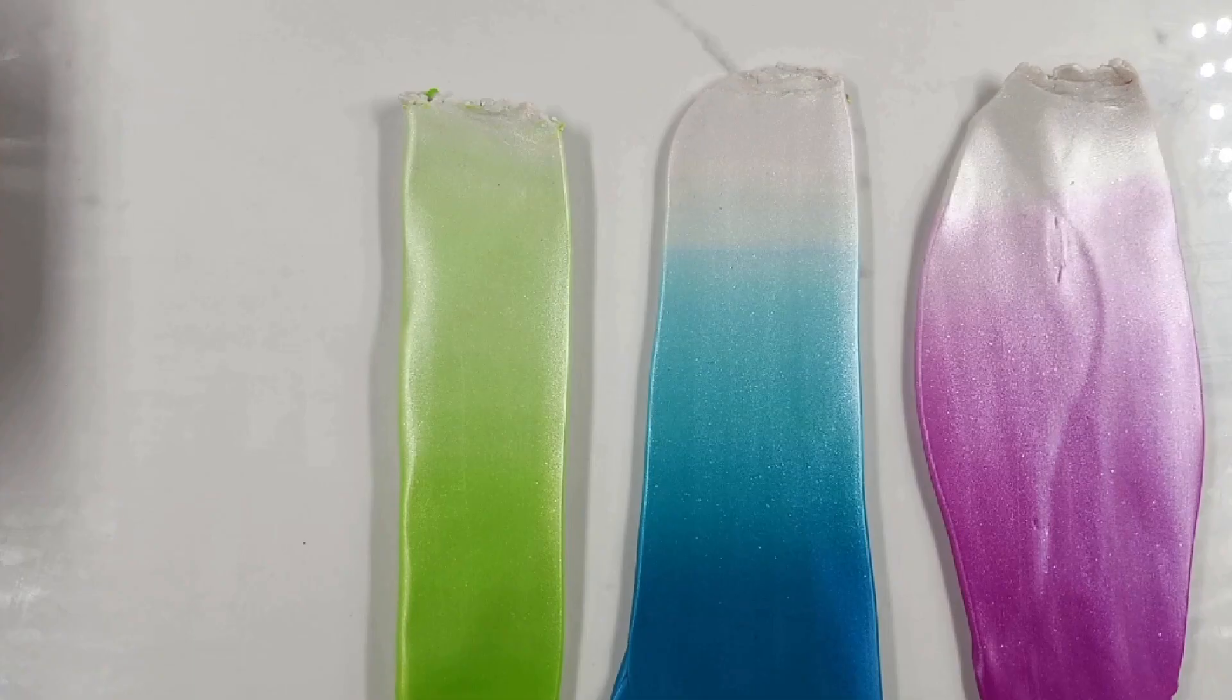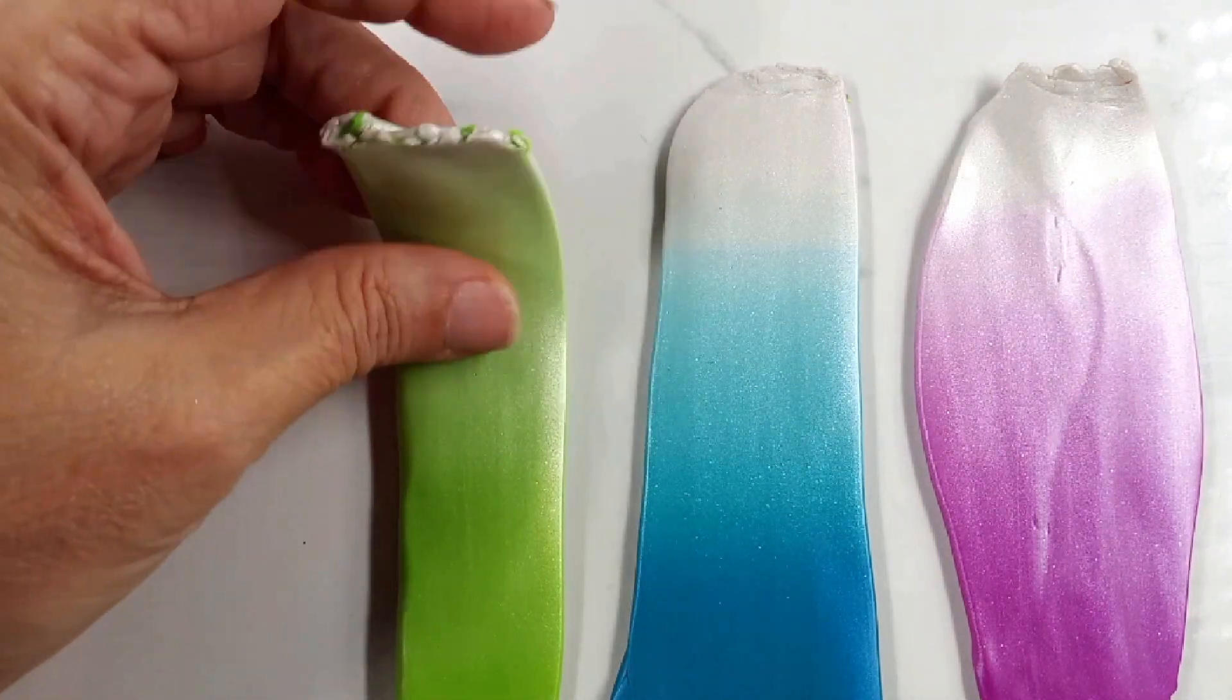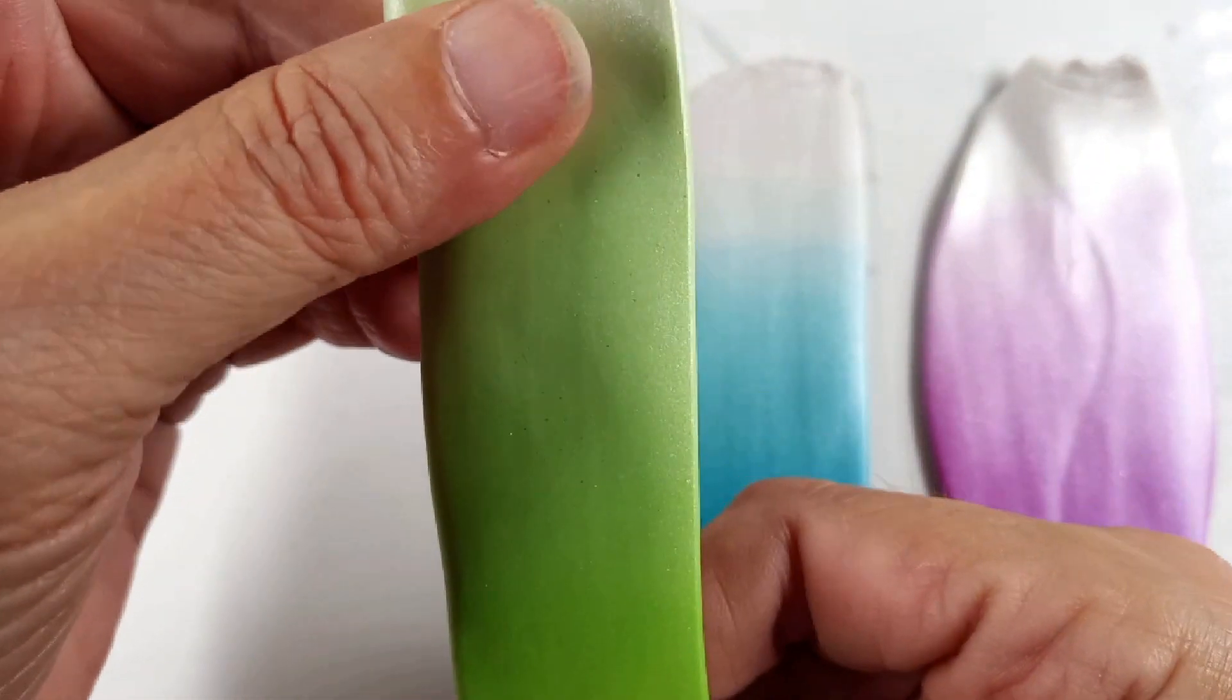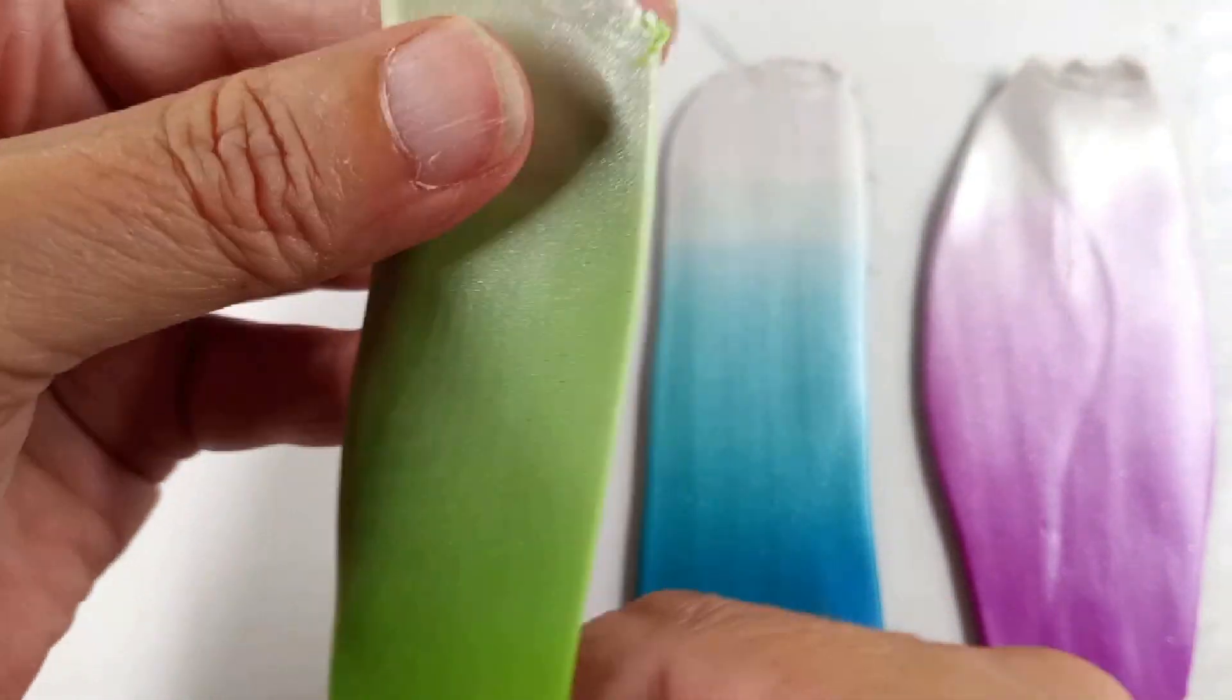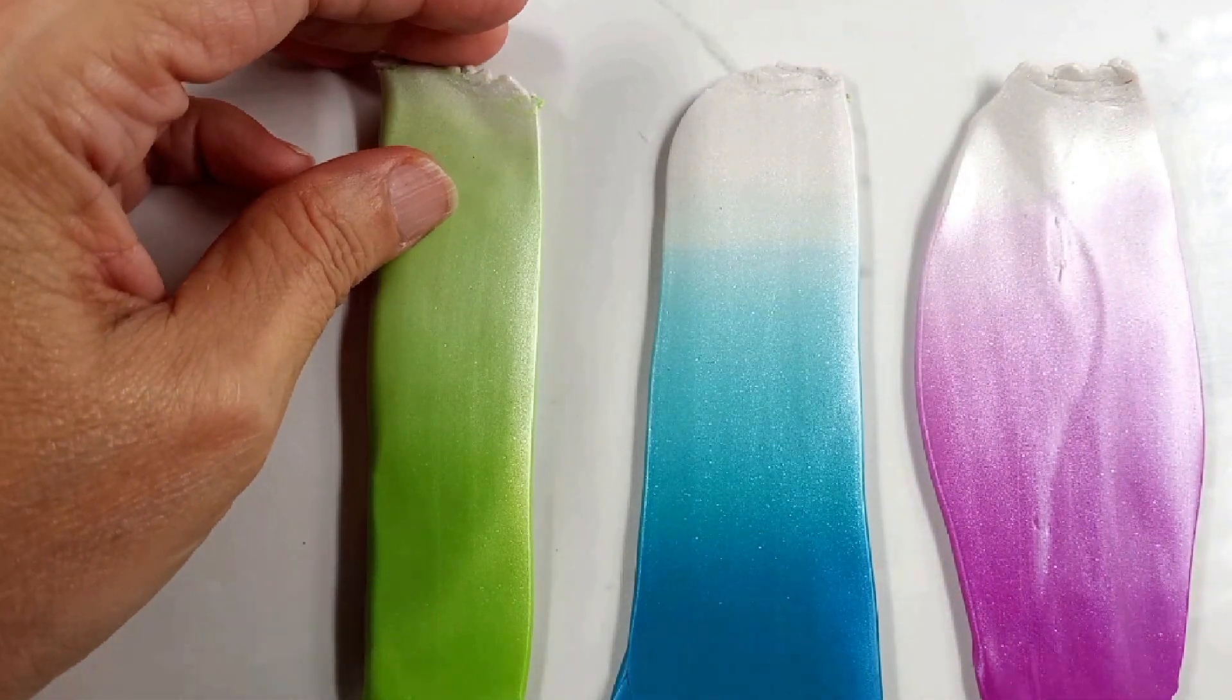So here are our three Skinner blends and now we're going to put them through the machine, reducing them each time until they're very, very thin. So I'm going to do that and I will be right back.